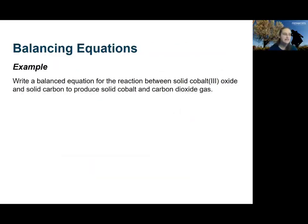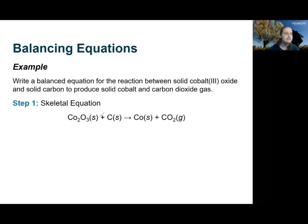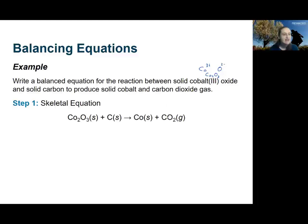Now let's look at another example that's slightly more complex. We want to write a balanced equation for the reaction between solid cobalt-3 oxide and solid carbon to produce solid cobalt and carbon dioxide gas. We start by writing all the compounds involved — this is also known as the skeletal equation. Cobalt-3 has a 3+ charge and oxygen has a 2− charge, so to balance the charges we need two cobalts and three oxygens, giving us Co2O3. Solid carbon is just the C atom, and we're producing solid cobalt Co and carbon dioxide gas CO2.